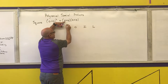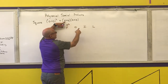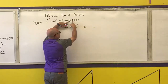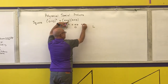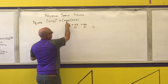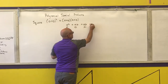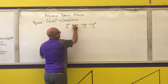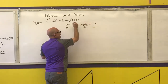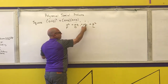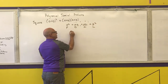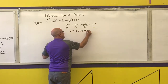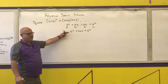A times a is a squared. Outer: a times b is ab. Inner: b times a is ba, which is the same as ab due to the commutative property. And b times b is b squared. Combining the two middle terms: one plus one is two of those somethings, so I get a squared plus 2ab plus b squared as my pattern.